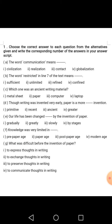Number G: What was difficult before the invention of paper? Options are: To express thoughts in writing, To exchange thoughts in writing, To preserve thoughts in writing, To communicate thoughts in writing. The answer is Option number 3, to preserve thoughts in writing.